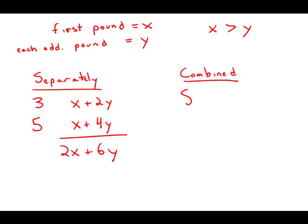If we combine them, we get a single eight-pound package. That's going to cost X for the first pound plus 7Y for the remaining pounds. That's the cost of sending them combined.